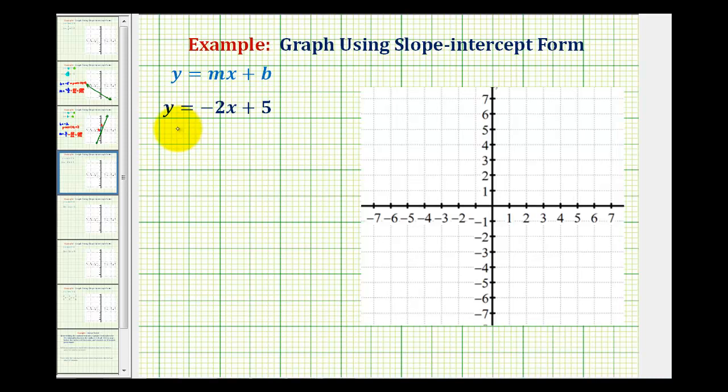We want to graph the following line using slope-intercept form of a line, which is y equals mx plus b, where b is the y-intercept of the line, and m is the slope of the line.